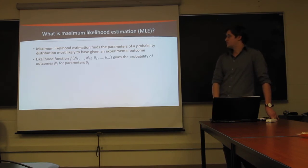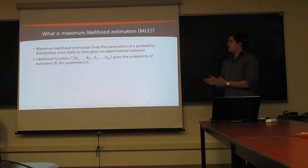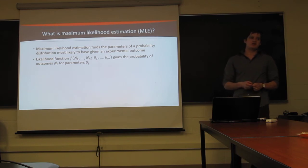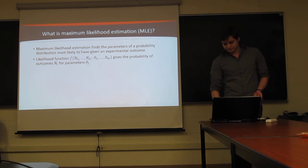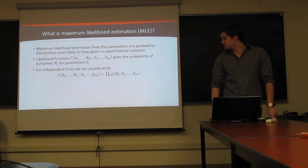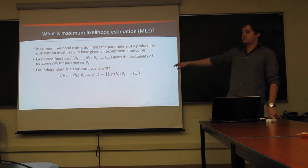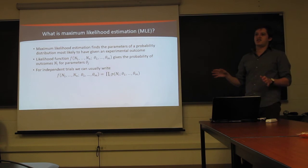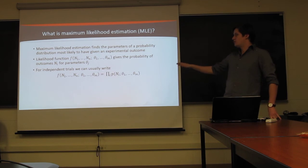In this case, we have some list of measurements, list of counts from different projections, and we want to know what quantum state was most likely to have given that. So, to do that, we construct what's called the likelihood function. This is just a mathematical probability density that gives the probability of the outcome we saw, given a model for our parameters.